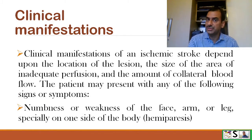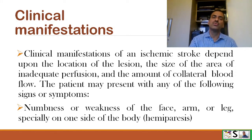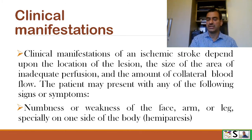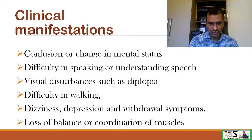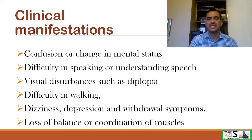What clinical manifestations appear due to stroke? Clinical manifestations of ischemic stroke depend upon the location of the lesion, the size of the area of inadequate perfusion, and the amount of collateral blood flow. The patient may present with numbness and weakness of the face, arms, or leg — especially on one side of the body, known as hemiparesis — confusion, change in mental status, difficulty in speaking or understanding speech, visual disturbances such as diplopia, and difficulty in walking.